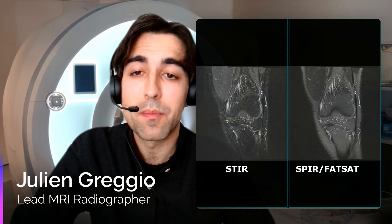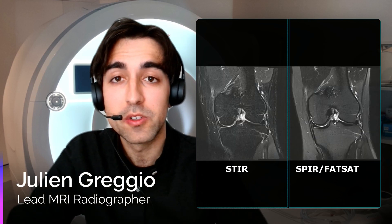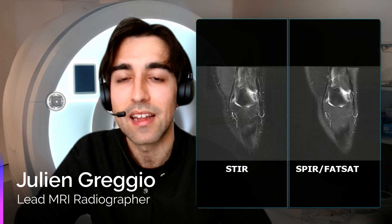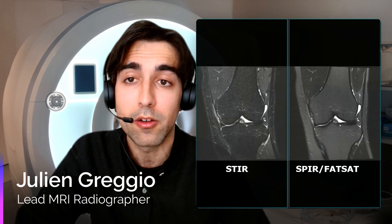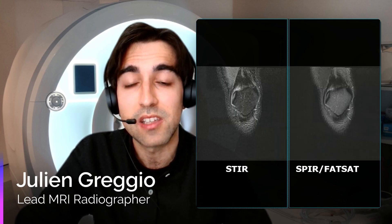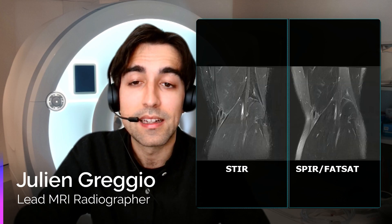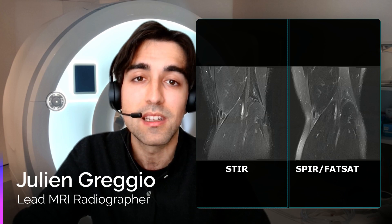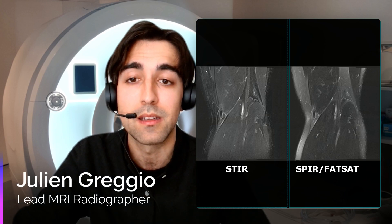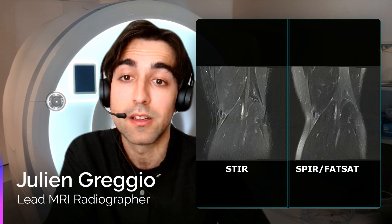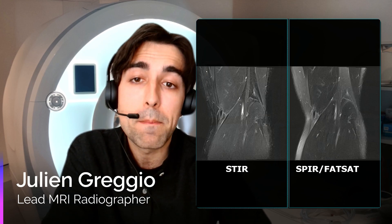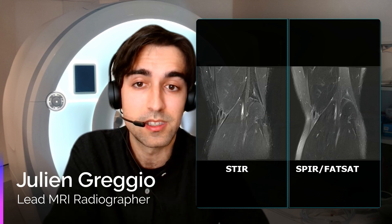A similar argument can be made when SPIR or FATSAT technique is used. Again, in an area like the knee, fat suppression homogeneity is still decent and the SNR level is superior compared to STIR. However, as we said, this type of sequence suffers from field inhomogeneities for both B0 and B1, so bear in mind that even in a small area like the knee, these sequences might be exposed to a significant number of artifacts — for instance in the presence of a knee replacement or partial knee replacement. Artifacts instead might be definitely less marked on a STIR sequence.